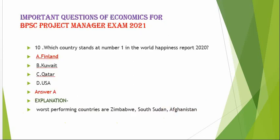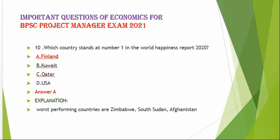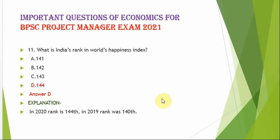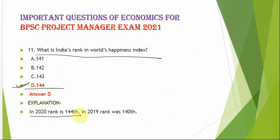The next question is: which country stands at number one in the World Happiness Report? The correct option is option A — Finland. The worst performing countries are Zimbabwe, South Sudan, and Afghanistan. The next question is: what is India's rank in the World Happiness Index? The correct option is option D — 144. India's rank in 2020 is 144, while in 2019 India's rank was 140th.